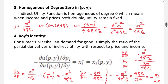The third property is that the indirect utility function is homogeneous of degree zero in prices and income. This means when income and prices both double, utility remains fixed.